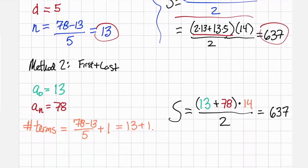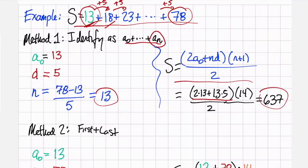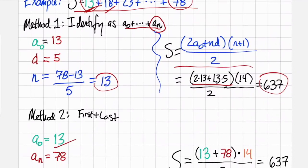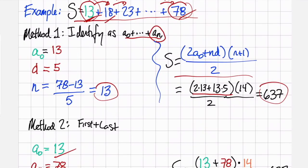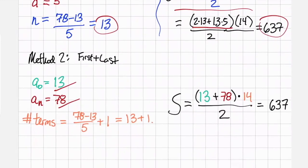If we wanted to apply method 2, what we would do is figure out the first term of this series is 13, the last term is 78, and the number of terms we would have to calculate by doing 78 minus 13 divided by the common difference 5, add 1, and so the number of terms is 14.